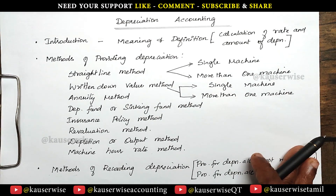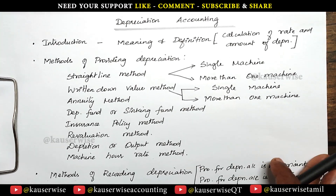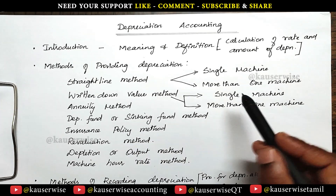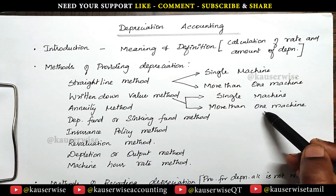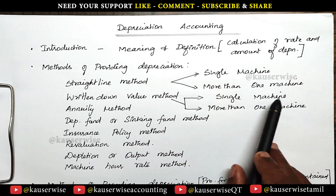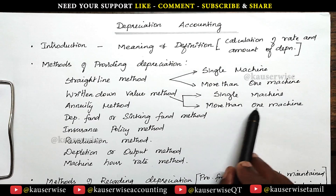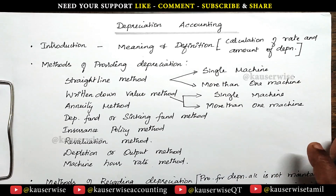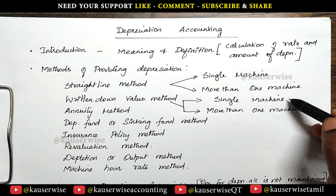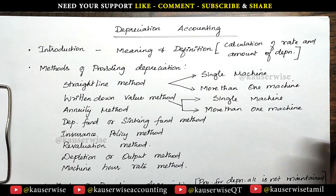Now in this video, we are going to see the numerical problem for the written down value method. In that, we have two different models. The first one is a single machine, and the second one is more than one machine. Now let us see the numerical problem for the first one, that is a single machine.